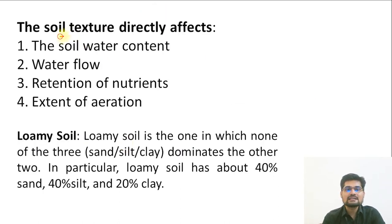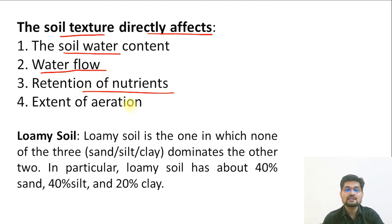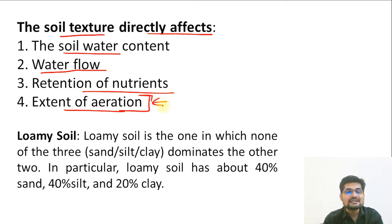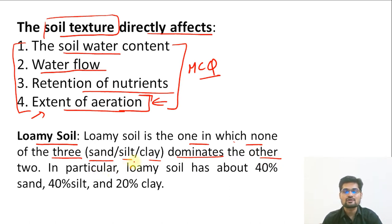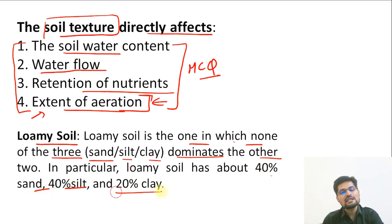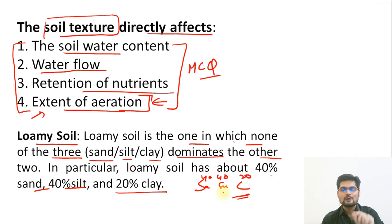Soil texture directly affects soil water content, water flow, retention of nutrients, and extent of aeration — basically how much air can enter the soil. Loamy soil is one in which none of the three — sand, silt, or clay — dominates the others. They are in a fixed proportion: 40% sand, 40% silt, and 20% clay. Remember this 40-40-20 ratio for loamy soil.